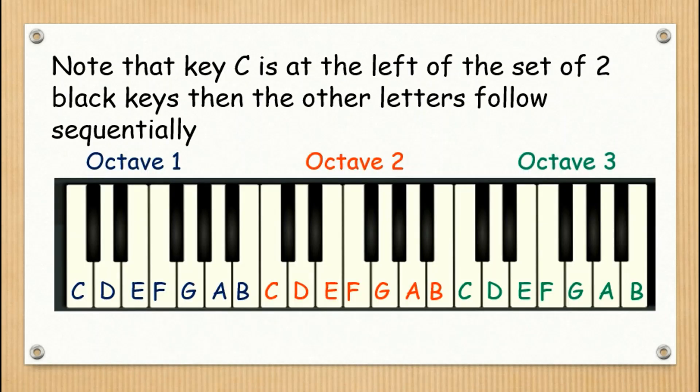Note that key C is at the left of the set of two black keys. Then the other letters follow sequentially. As you can see in our example, we have octave 1. Key C is at the left of two black keys. In octave 2, key C is also at the left of two black keys.